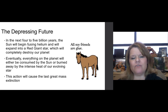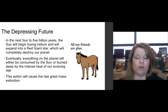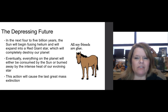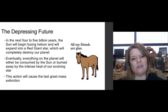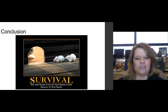The depressing future: in the next four to five billion years, the sun will begin fusing helium and expand into a big red giant star, completely destroying our planet. We actually have more to worry about in the next one to two billion years. Eventually everything on the planet will either be consumed by the sun or burned away by the intense heat of our evolving star — causing the last great mass extinction. Or will mass extinctions be caused by something else before then? Will it be humans, another asteroid impact, or climate change?